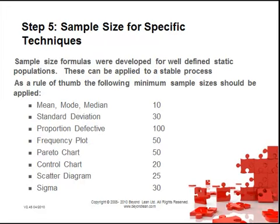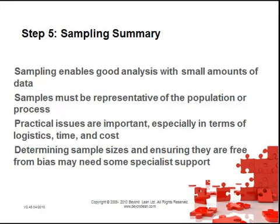For sample size for specific techniques, the following minimum sample sizes should be applied as rules of thumb: mean, mode or median — 10; standard deviation — 30; proportion defective — 100; frequency plot — 50; Pareto — 50; control chart — 20; scatter diagram — 25; sigma level — 30. In summary, sampling enables good analysis with small amounts of data, but samples must be representative of the population or process. Practical issues around logistics, time and cost are important, and determining sample sizes may need some specialist support.